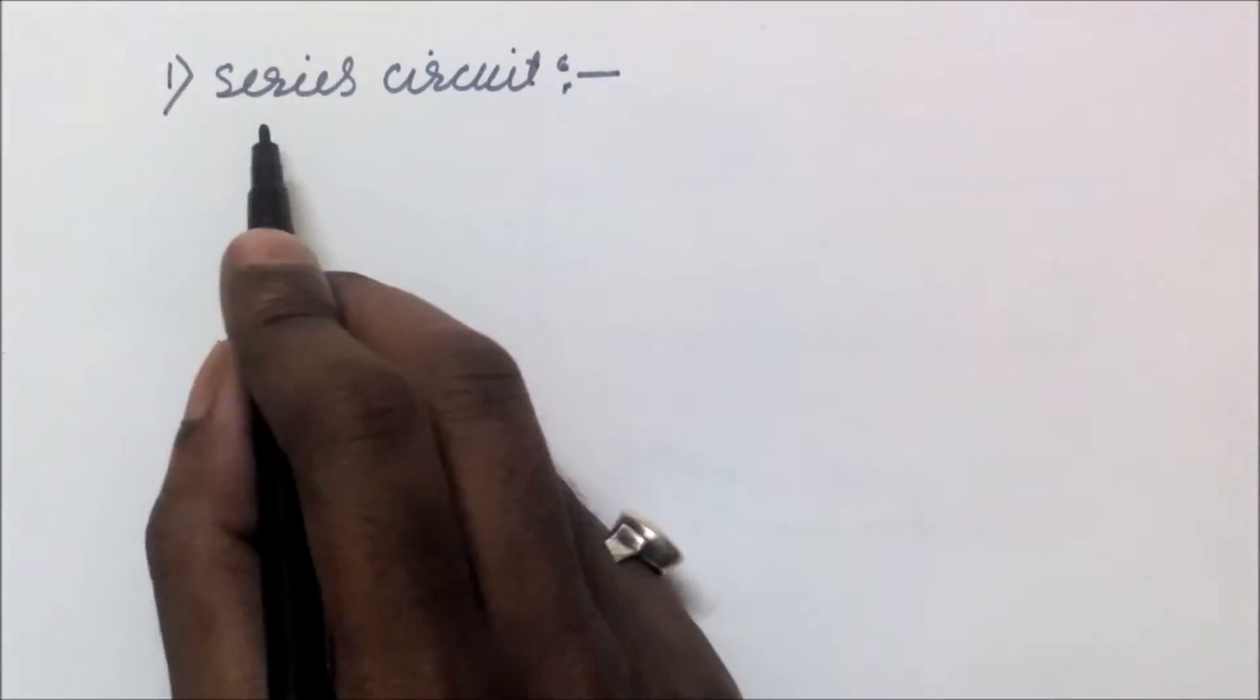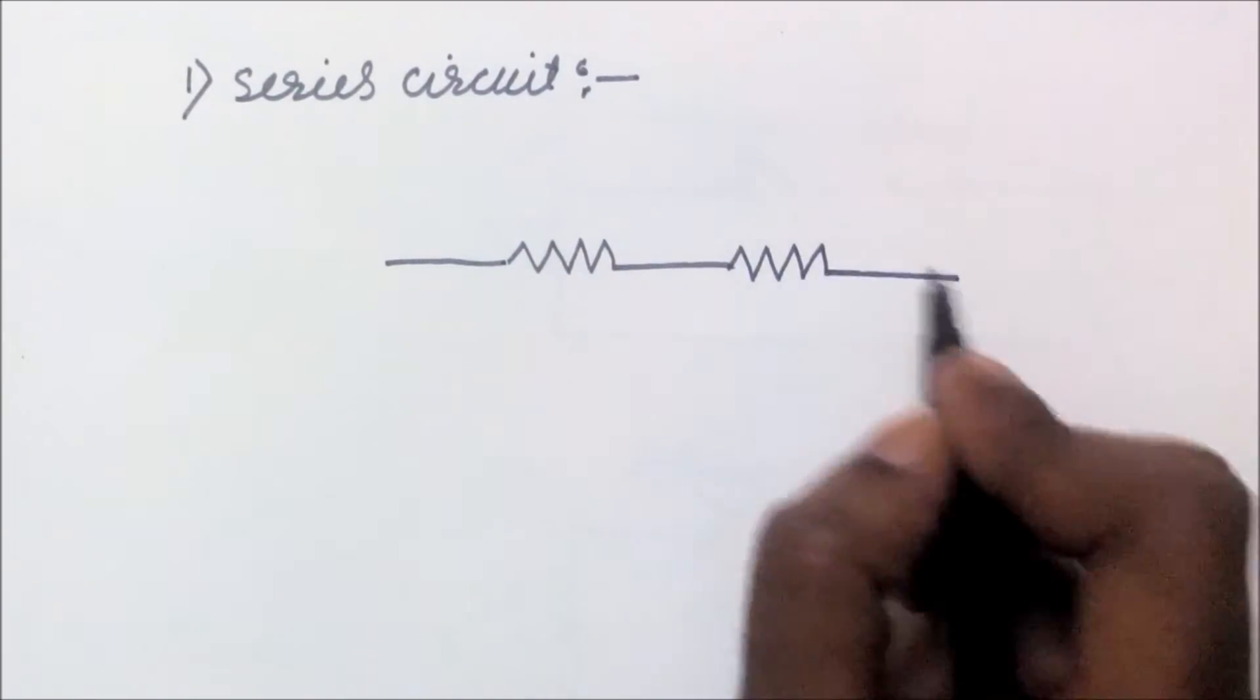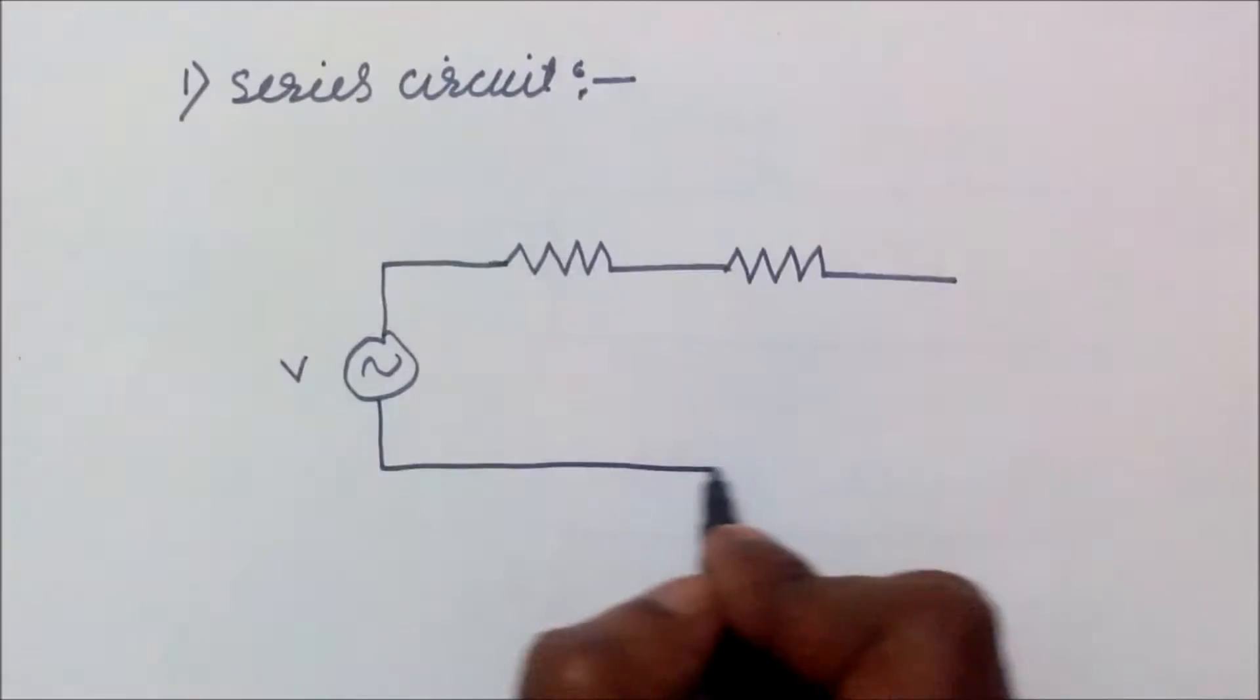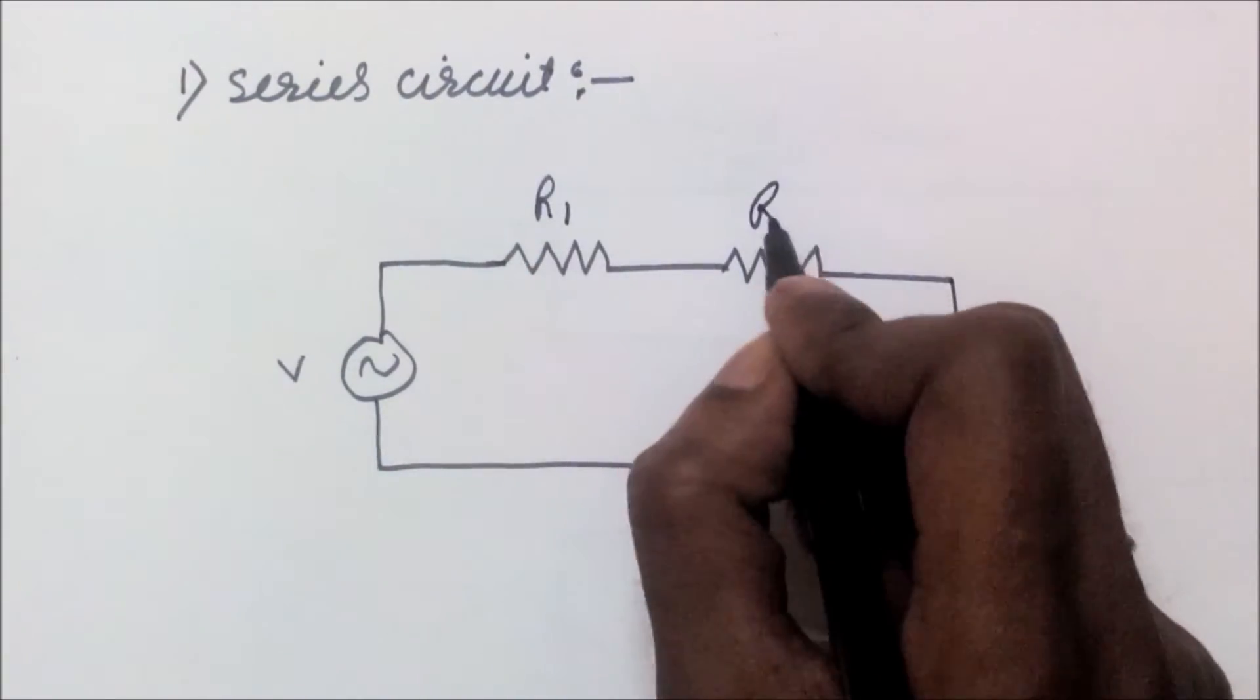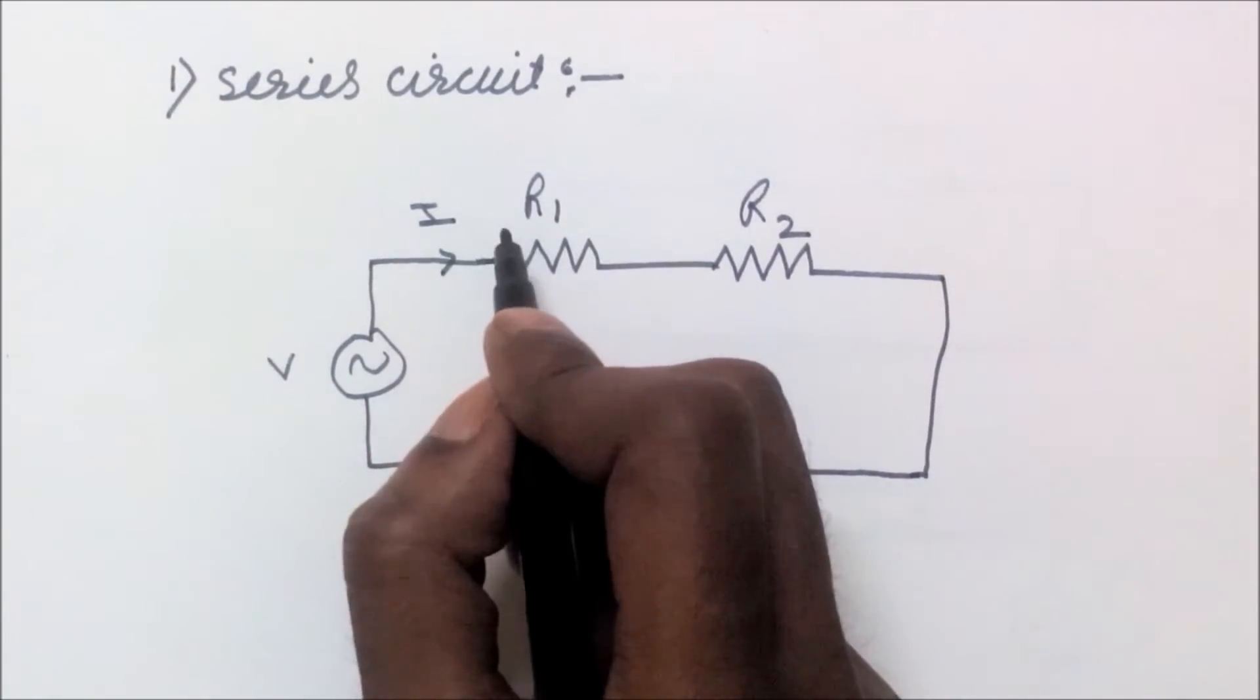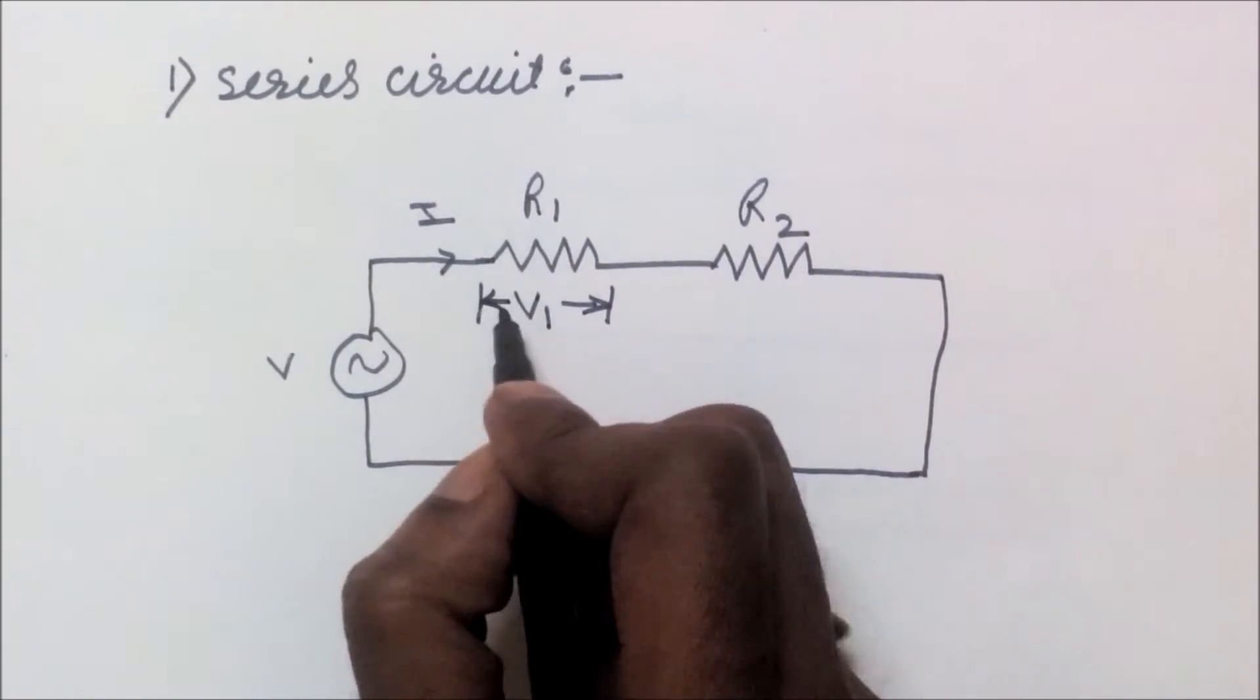So what is a series circuit? When loads are connected in series like this, this is called a series circuit. Suppose this is R1 and this is R2. In a series circuit, current is the same but voltage is different. Here is one voltage drop, that is V1 across R1, and another voltage drop across R2.